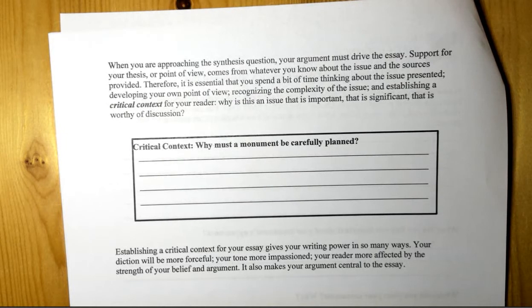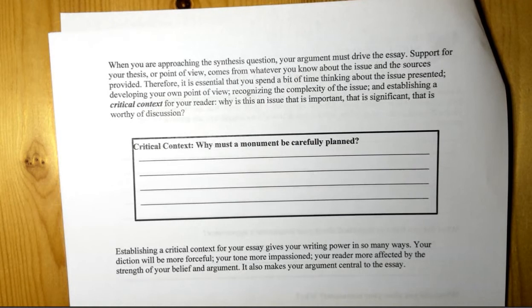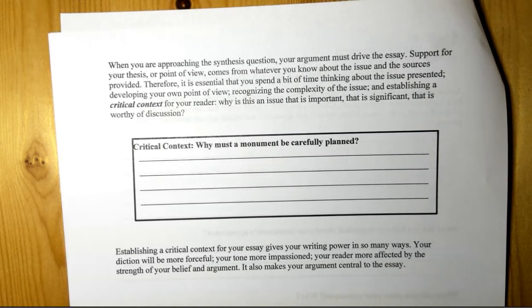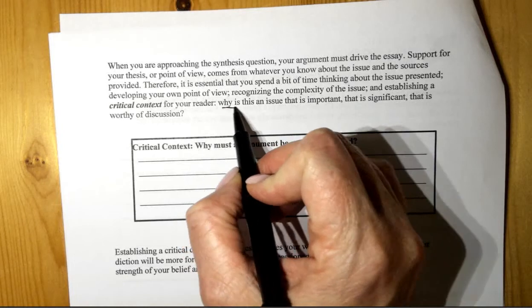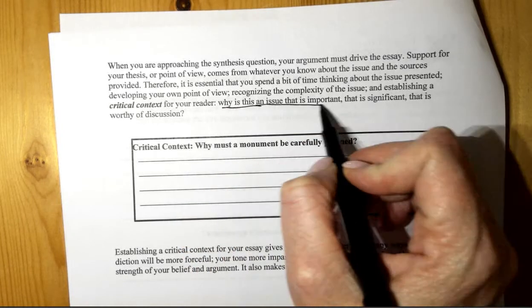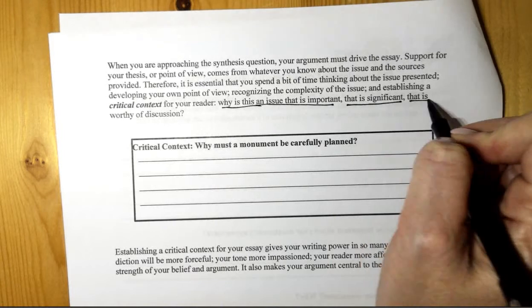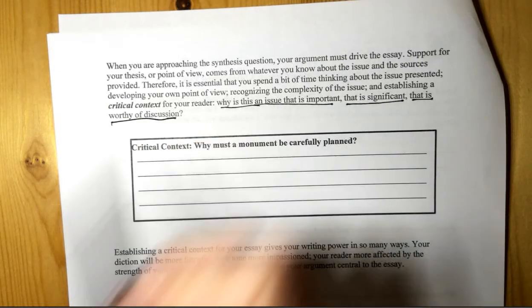When you're approaching the synthesis question, your argument must drive the essay. Support for your thesis or point of view comes from whatever you know about the issue and the sources provided. Therefore, it is essential that you spend a bit of time thinking about the issue presented, developing your own point of view, recognizing the complexity of the issue, and establishing the critical context for the reader. So here is the definition or the questions you ask for the critical context. Why is this an issue that is important? Why is it significant? Or why is it worthy of discussion?